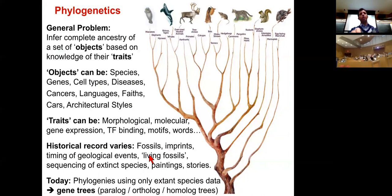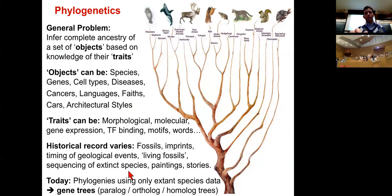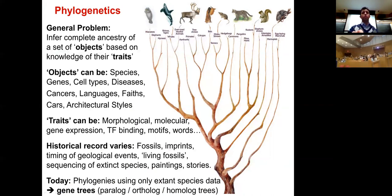A dramatic example is Drosophila in Hawaii, where new lava flows effectively cause speciation events. You can also sequence extinct species, though DNA degrades rapidly and bacteria take over quickly. Today we're going to build phylogenies using only extant lineages and gene trees as features, looking at orthologous, paralogous, and homologous genes.